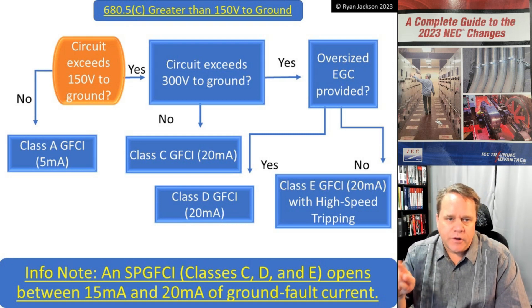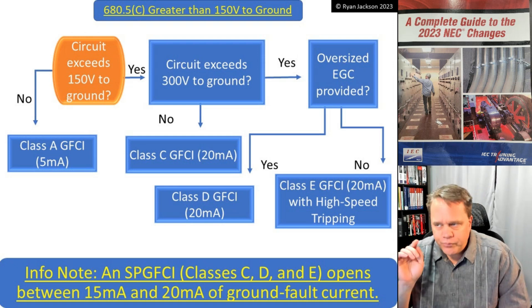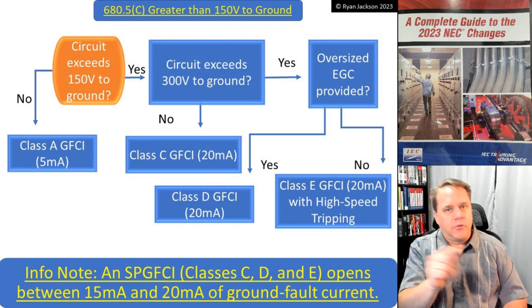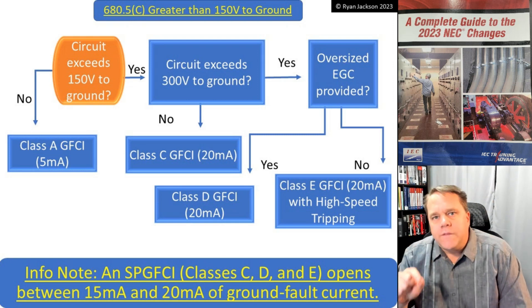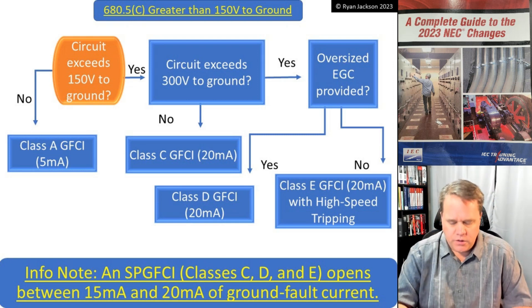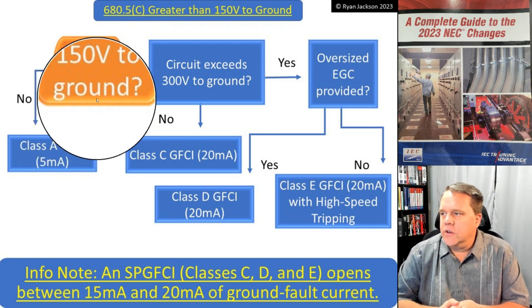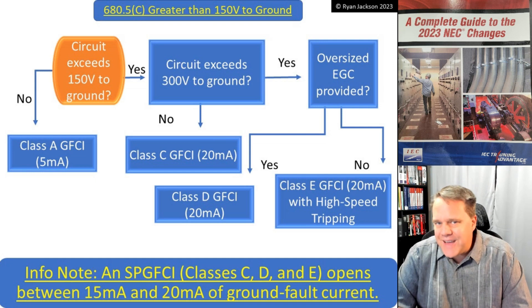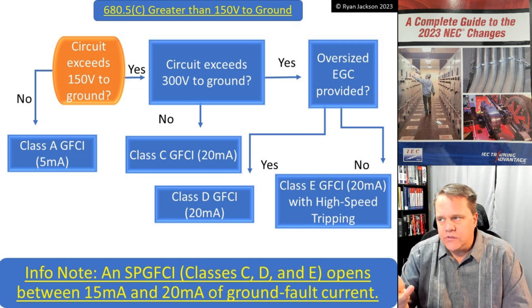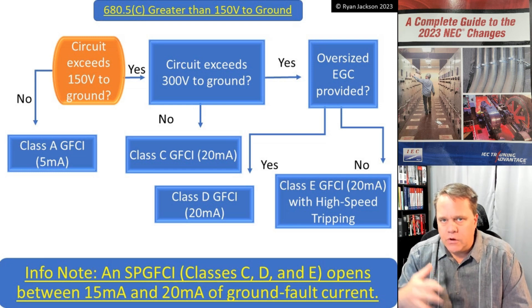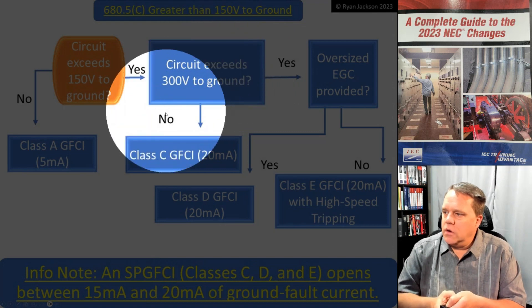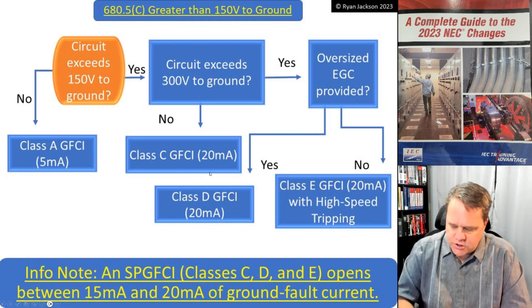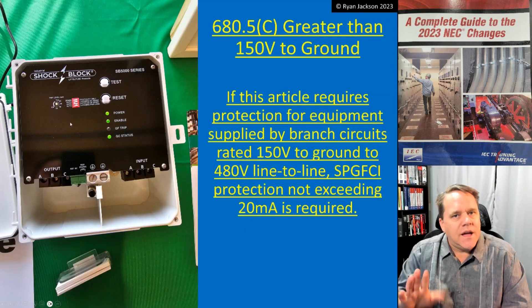Looking at the flow chart: starting at the orange one — if the circuit does not exceed 150 volts to ground, then we use Class A GFCI protection, which opens between four and six milliamps. What if the circuit does exceed 150 volts to ground? Then we keep reading and ask: does the circuit exceed 300 volts to ground? A 277/480-volt Y-connected system does not exceed 300 volts to ground. So if it's 277/480, the answer is no — I'm going to install a Class C GFCI, which operates at 20 milliamps. I would dial in the setting to 20 milliamps on that protection device.